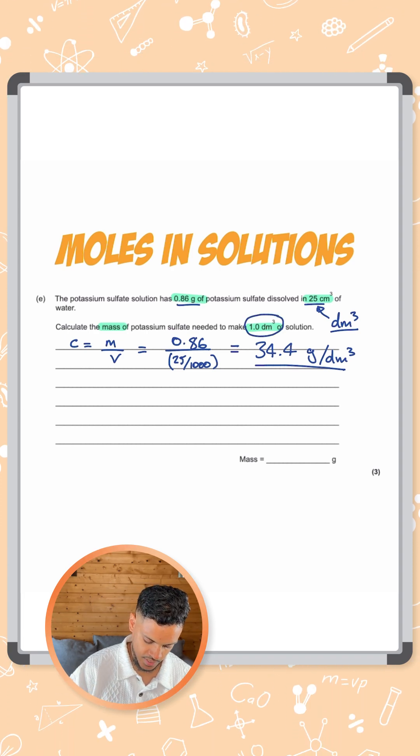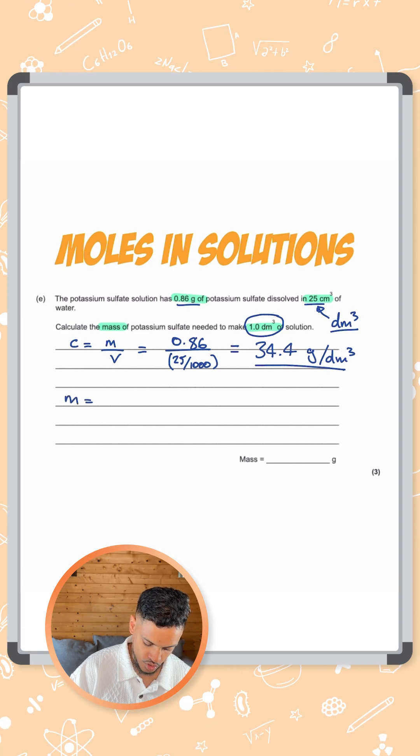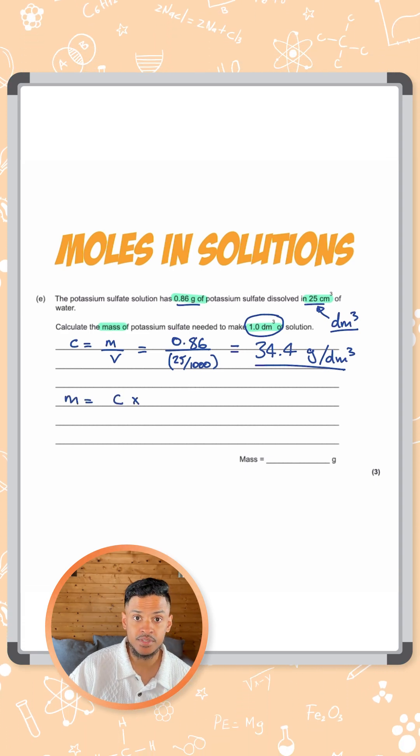So all you need to do here is use the same equation again, but rearrange it. Mass is equal to concentration times by the volume.